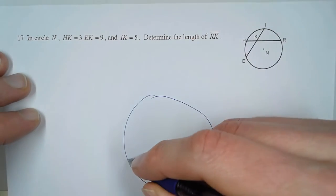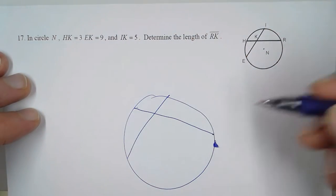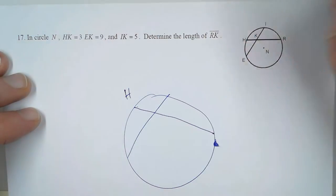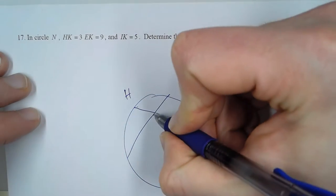Now, in any circle, when you have two chords that intersect, H and R, we'll call this, and this is point K.